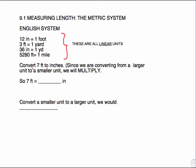So we're asked to convert 7 feet to inches. Since we are converting from a larger unit to a smaller unit, we will multiply. The chart tells you what the conversions are. There are 12 inches in one foot, so we multiply by 12, and that gives us 84 inches. So 7 feet contains 84 inches.